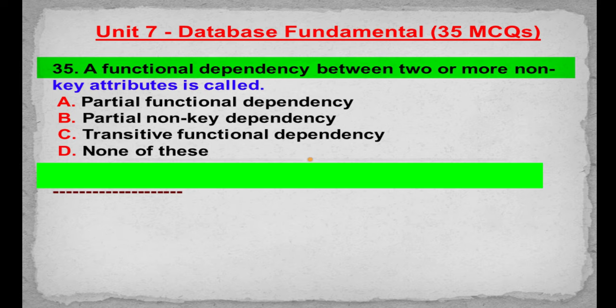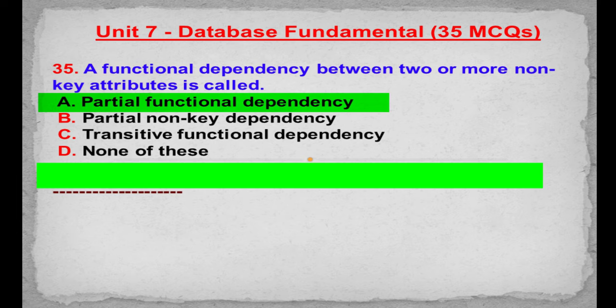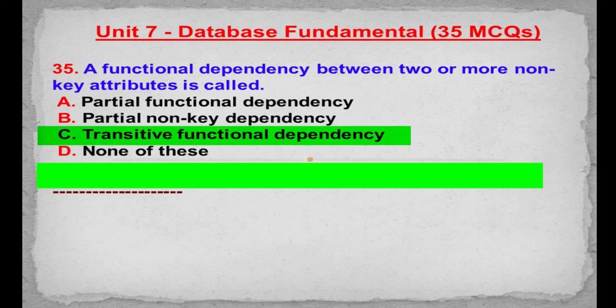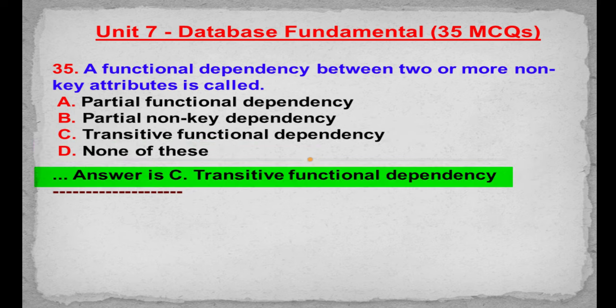MCQ number 35: A functional dependency between two or more non-key attributes is called. Option A: Partial functional dependency. Option B: Partial non-key dependency. Option C: Transitive functional dependency. Option D: None of these. Correct answer is Option C: Transitive functional dependency.